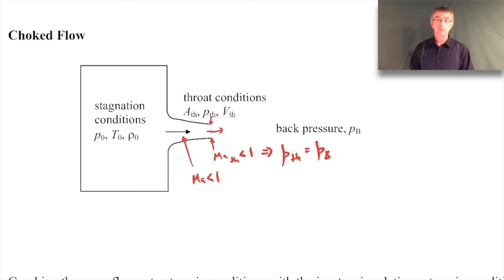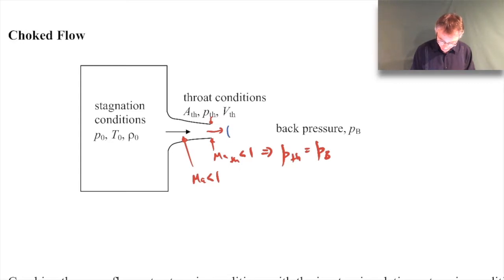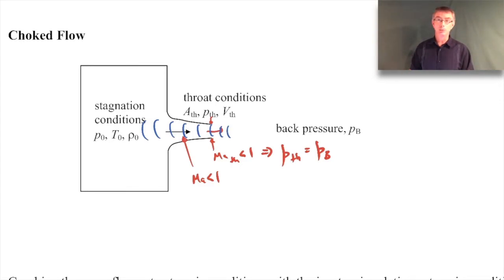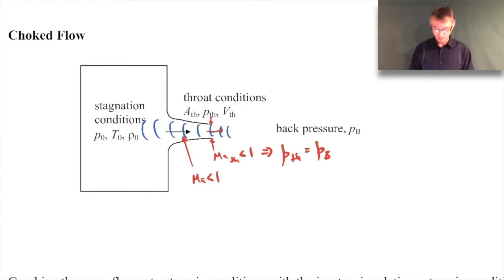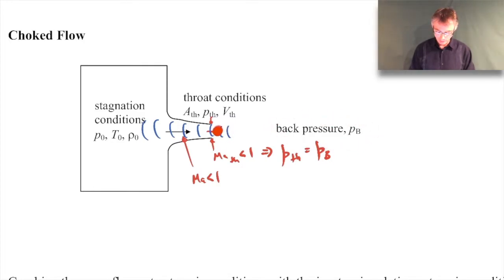Now let's drop the back pressure a little bit further. As I drop the back pressure, what ends up happening is every time I change it, there's a little sound wave that propagates upstream. That's what informs the tank that there's a pressure gradient — every time I drop this back pressure, that information is communicated upstream to the tank. The tank recognizes there's a larger pressure gradient and pushes more fluid through the nozzle. Every time I change that back pressure, a sound wave propagates upstream.